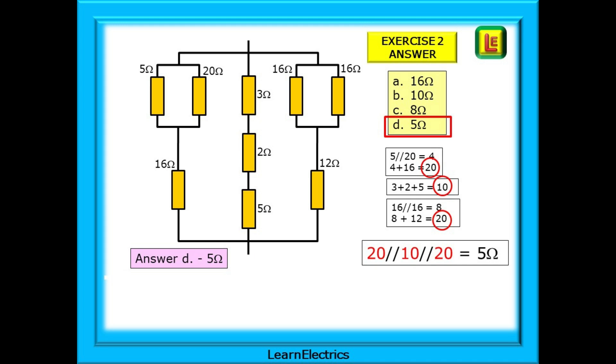You should choose answer D which is 5 ohms. We've shown the calculations in shorthand starting on the left. 5 in parallel with 20 is 4 ohms, and 4 ohms plus 16 is 20 ohms. For the centre 3 plus 2 plus 5 is 10 ohms. And now the right hand side: 16 in parallel with 16 is 8 ohms. Add 8 ohms to 12 ohms and we have 20 ohms. That gives us three resistances in parallel: 20 ohms, 10 ohms and 20 ohms. Finally use the reciprocal formula and we will have our answer: 5 ohms.